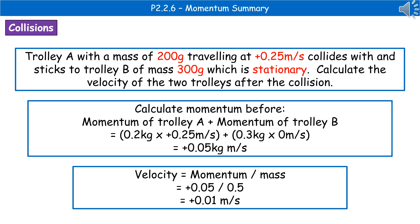Next thing we need to do is to calculate our velocity. So, we can rearrange the equation, and we get momentum divided by mass. So, then we put in our momentum, which is plus 0.05, and we divide that by the mass of 0.5, which is the two trolleys added together, because it tells us they stuck together, and that gives us our velocity after of plus 0.01 meters per second.